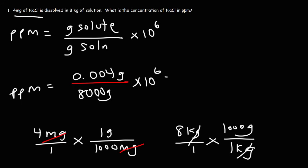Then we're going to multiply by 10 to the 6. So 0.004 divided by 8,000, times 1 times 10 to the 6, gives us 0.5. So the concentration of sodium chloride in this solution is 0.5 parts per million. Now let's move on to the next problem.